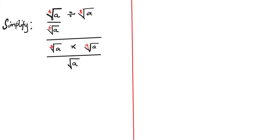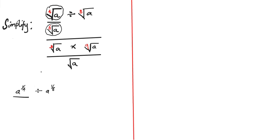In order to solve this problem, we are going to rewrite all these terms in exponential form. So let's start with the fourth root of a — we rewrite it as a to the power one over four. Then we have division, then the eighth root of a, rewritten as a to the power one over eight. Then we have division, then the sixth root of a, rewritten as a to the power one over six.